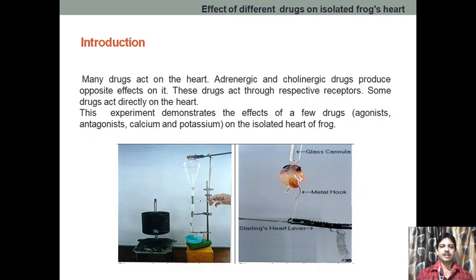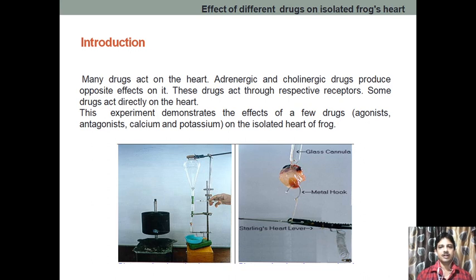There are different types of drugs which act on the heart — for example, different cholinergic drugs and different adrenergic drugs that produce effects. In the heart, the cholinergic system is activated and the adrenergic system is also activated, maintaining a balance in contraction, heart rate, etc. They act through their different receptors — it may be the cholinergic receptor or it may be the adrenergic receptor.